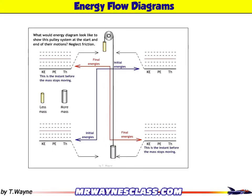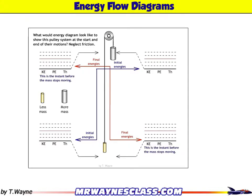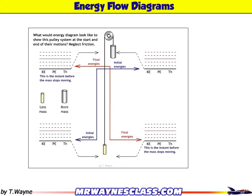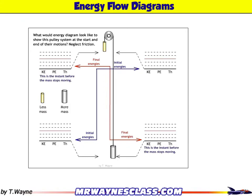Let's take a look at another energy flow diagram problem. Energy flow is within the system, and the system this time is going to be the heavy silver weight on the right, the light gold-colored weight on the left, and the earth. The earth is where the potential energy due to gravity comes from. So that rope is exchanging the energy between these two weights, but I've also got to deal with the earth.